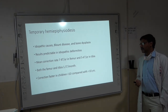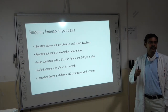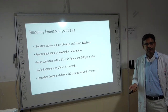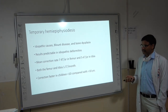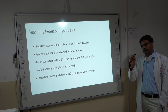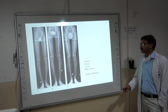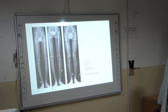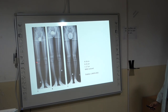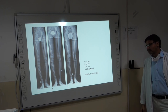Growth modulation is used in Blount's disease and bone dysplasias — results are predictable in idiopathic deformity but less so when the physis is pathological. Mean correction rate is 7 to 8 degrees for femur and 5 to 6 degrees for tibia; or an average of 1.5 degrees per month if plates are on both femur and tibia. An example: a patient with bilateral genu varum had 8-plates placed on the lateral side of the proximal tibiae, with complete correction over about 3 years using this minimally invasive technique.